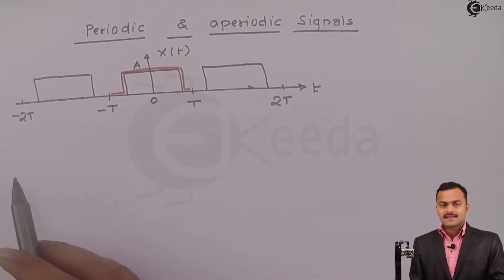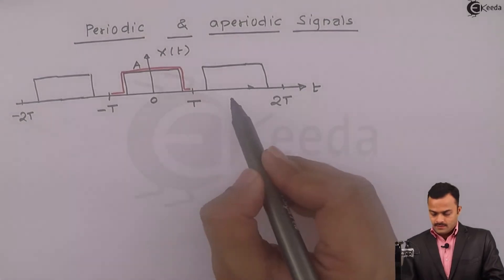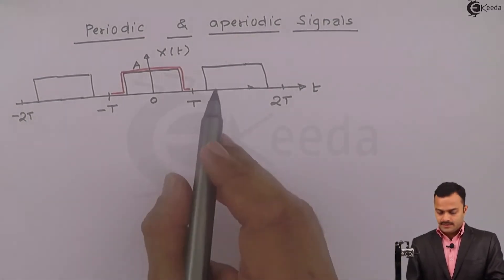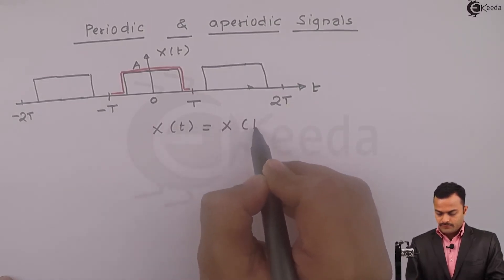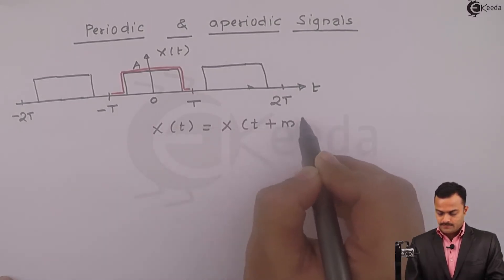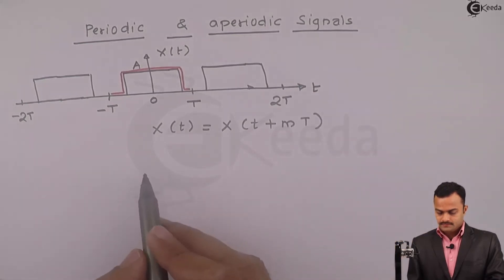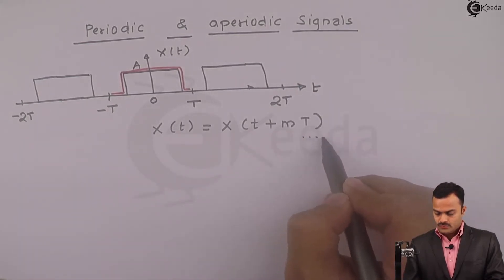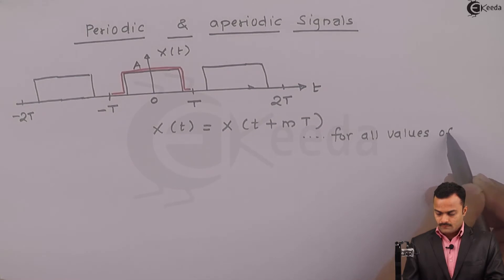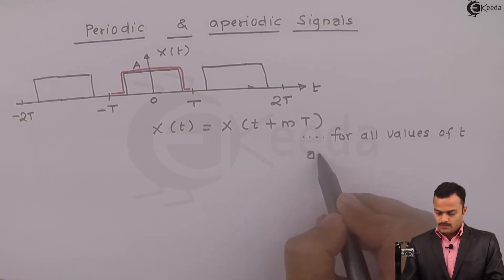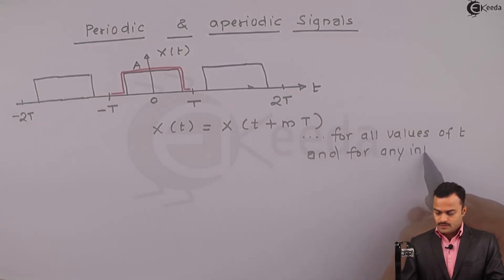So we can say over here the equation can be written as x(t) equal to x(t plus m capital T), and this is true for all values of t. Moreover, this is true for any integer m.